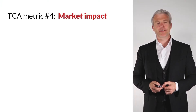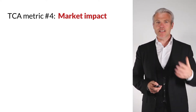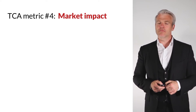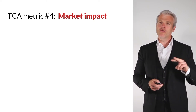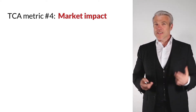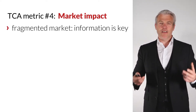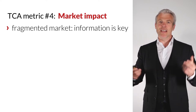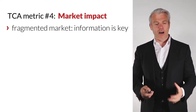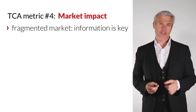Moving on to the fourth metric: market impact. This is actually flavor of the month, and there are two reasons why you should consider it. You should be aware that it is a fragmented market, so information is key. Information is powerful, and the speed of arrival of your order at different venues is very important to your execution strategy.